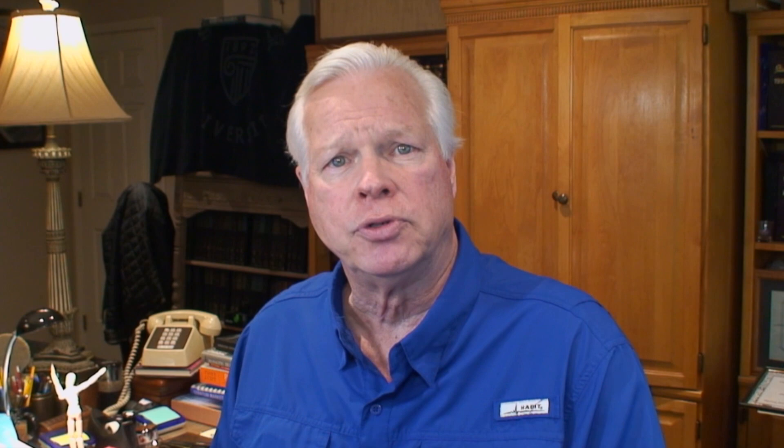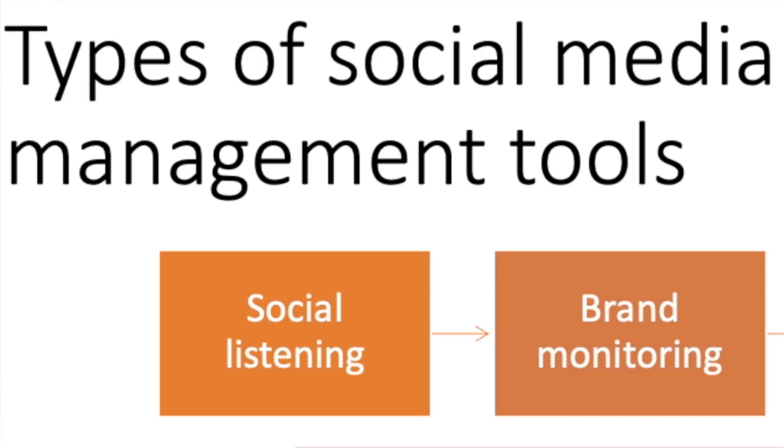The seven types of social media management tools are social listening, brand monitoring, scheduling, content management, management, reporting, and customer service. There are many companies providing these social monitoring and management tools for digital media creators. One such company, Hootsuite, provides brand monitoring and content scheduling, for instance.